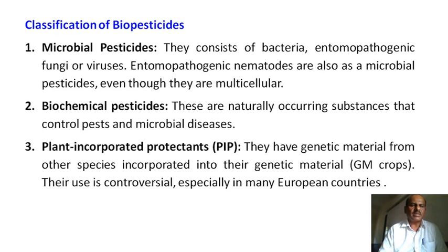Biopesticides are classified into microbial pesticides, which consist of bacteria and fungal biopesticides, as well as biochemical pesticides — substances generated from microorganisms that are used to control other microorganisms. There are also plant incorporated protectants, where genetic material is introduced into plants to control pest species. This approach is also used in European countries.